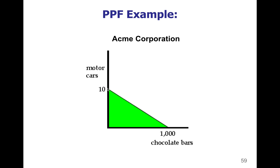The line between these dots represents the production that's possible if you want to have some motor cars and some chocolate bars. The green shaded area also represents possible combinations of motor cars and chocolate bars that Acme Corporation could create using the resources that they have.